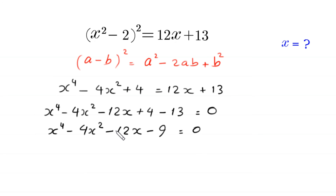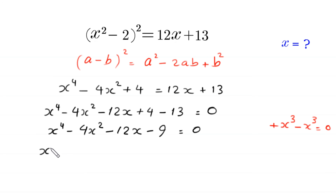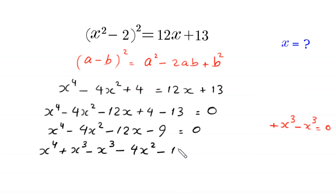Since there is no x³ term, we add and subtract x³ to enable factoring by grouping. The expression becomes x⁴ + x³ - x³ - 4x² - 12x - 9 = 0.